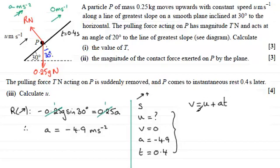So if we substitute in here our values, we've therefore got V, which is 0, equals U, which we're trying to find. And then we're adding the acceleration, which is minus 4.9 multiplied by the time of 0.4 seconds.